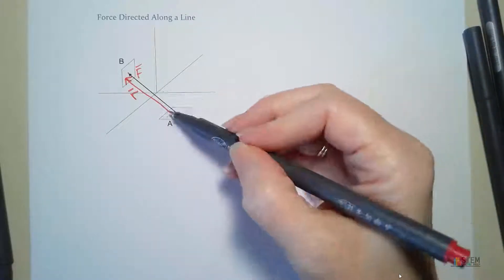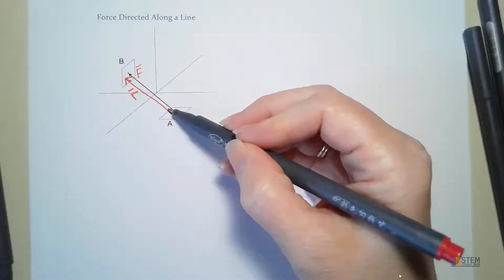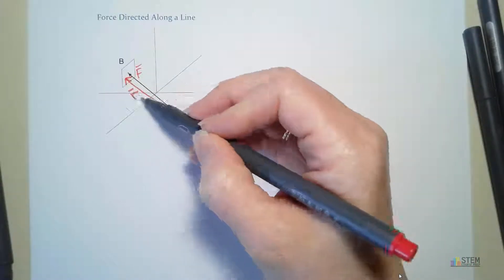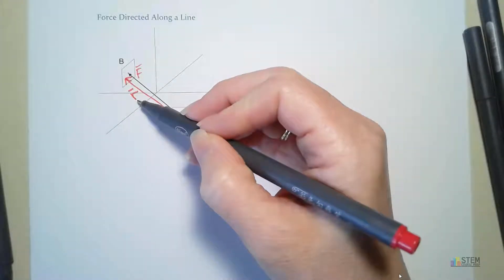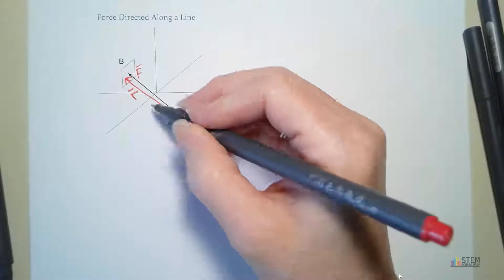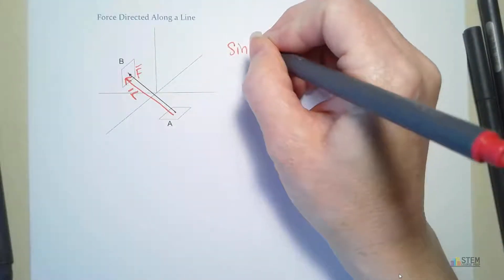Now, if you look here, R and F, they have the same direction, right? So that means that we can use this R, this position vector, to find the unit vector for that line.